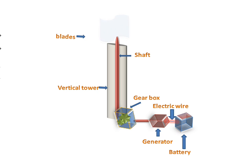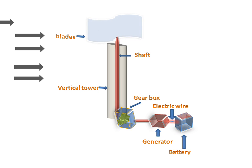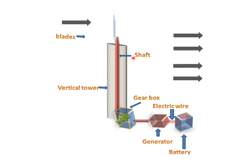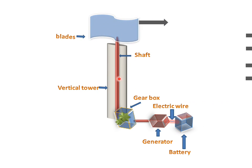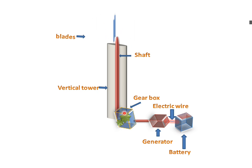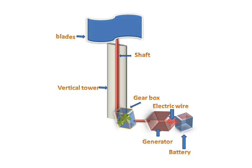When air passes through the vanes, it rotates the shaft, and the gears will also rotate. By the rotation of the gears, the generator will produce electricity. This electricity is supplied through the electrical wire, which is connected to the battery, and the battery stores all the current produced by the generator.